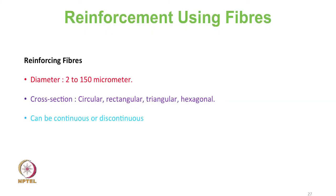Let us discuss the fibre phase reinforcement. Fibres range from 2 microns to 150 microns in diameter, depending on the type of material used. Generally, man-made fibres are circular in cross-section, but we can get different cross-sections — tubular, hollow, rectangular, hexagonal, or trilobal — depending on the application. Fibres can be used in the form of staple (discontinuous) or continuous filament form.